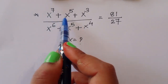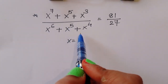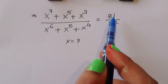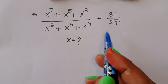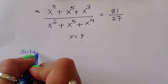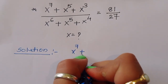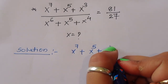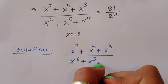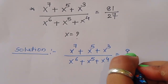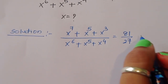The question is: given (x⁷ + x⁵ + x³) divided by (x⁶ + x⁵ + x⁴) is equal to 81 divided by 27, we have to find out the value of x. Let's see the solution.